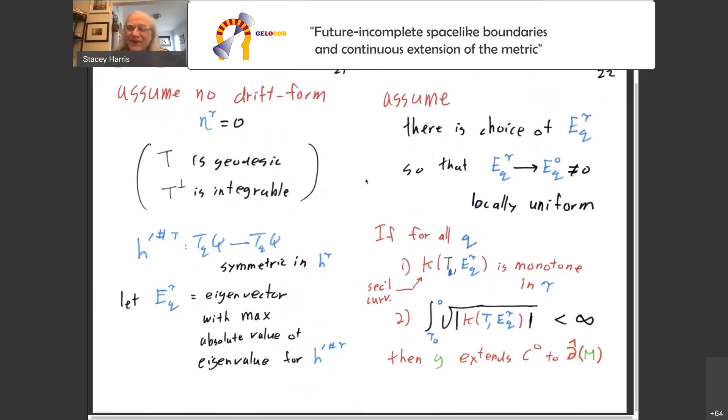It's rather complicated to express the Riemann curvature tensor because it's a perfectly general metric. It can be done, but things simplify lots if we assume no drift form. So assume eta is zero so that our foliates are geodesic and the perp space is integrable. Things are much simpler then.